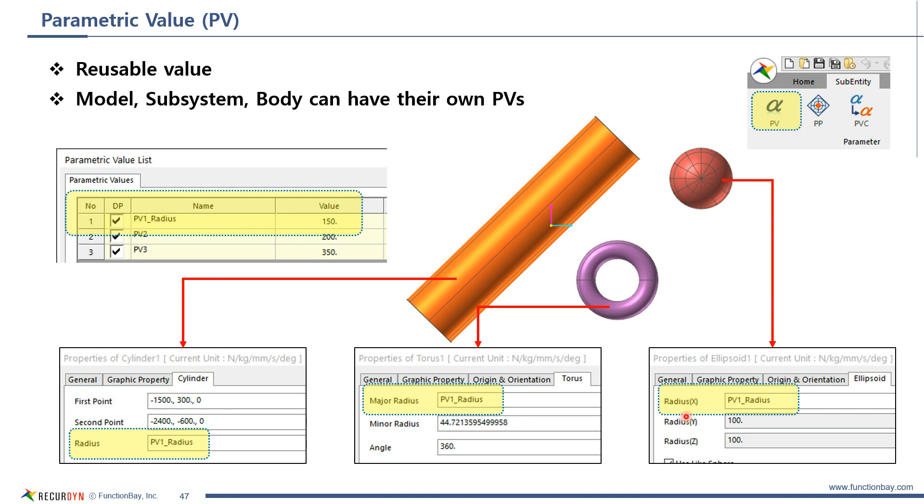It can be used for bodies, for joints, for contacts. Then, if this parametric value is changed, all the parameters set to the entities are affected.